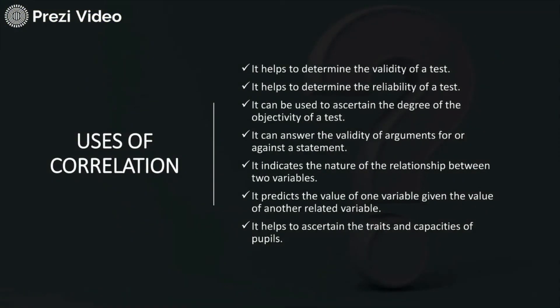Let us understand the different uses of correlation. In biostatistics, it helps in several ways — to determine the validity of any test, to calculate the reliability of any test, to ascertain the degree of objectivity, and to ensure the validity of arguments for or against a statement. It is very helpful in determining the nature of the relationship between two variables and predicting the impact of one variable on another. It also helps us ascertain the traits and capacities of individuals.